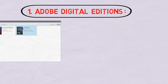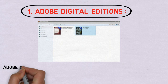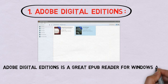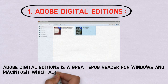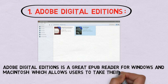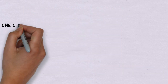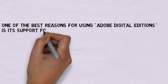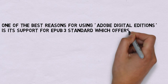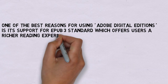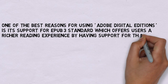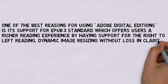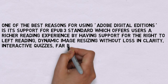1. Adobe Digital Editions. Adobe Digital Editions is a great EPUB reader for Windows and Macintosh which allows users to take their favorite titles. One of the best reasons for using Adobe Digital Editions is its support for EPUB 3 standard, which offers users a richer reading experience by having support for right-to-left reading, dynamic imagery sizing without loss in clarity, interactive quizzes, and better rendering of math formulas, and more.